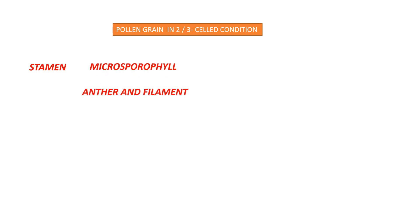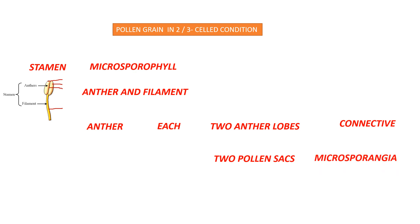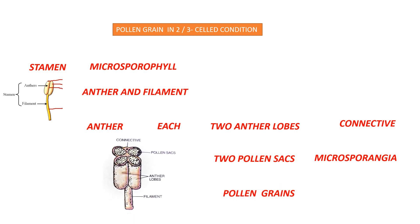Let us see some of the structures of the androecium. A group of stamens makes the androecium; these stamens are also called microsporophylls. Each stamen has an anther and a filament. Each anther has two anther lobes connected by a tissue called the connective. Each anther lobe has two pollen sacs, also called microsporangia. So the anther has four pollen sacs in total.